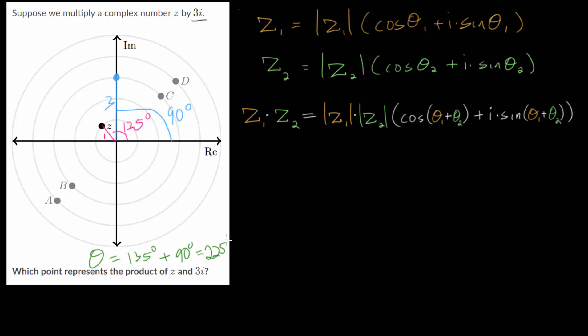So the angle we are looking for is about 135 degrees plus 90 degrees. If we add 100 that's 235 and then subtract 10 brings us to 225. The magnitude of this new complex number which we can write as 3i times z, its magnitude which we can put in absolute values would be 3 times 1 which is just 3.